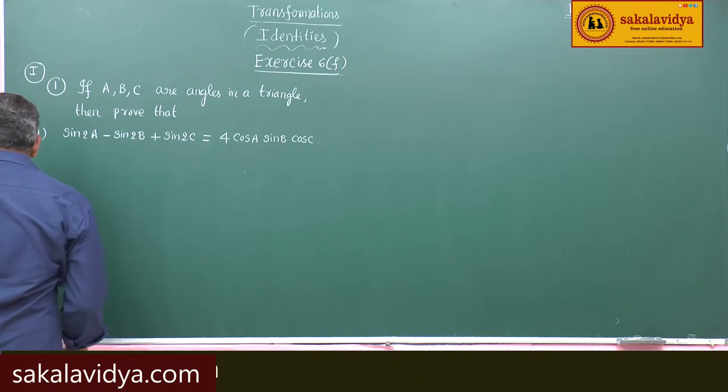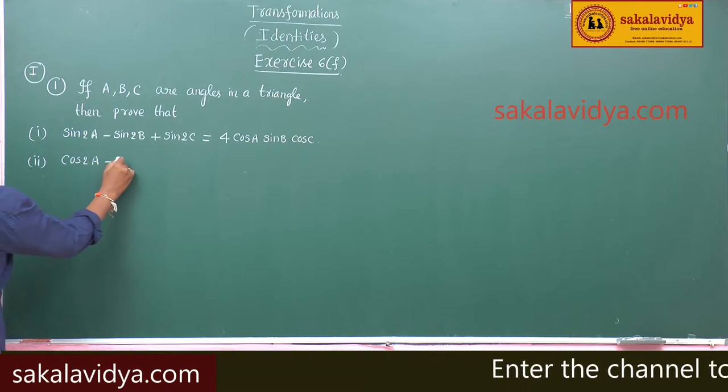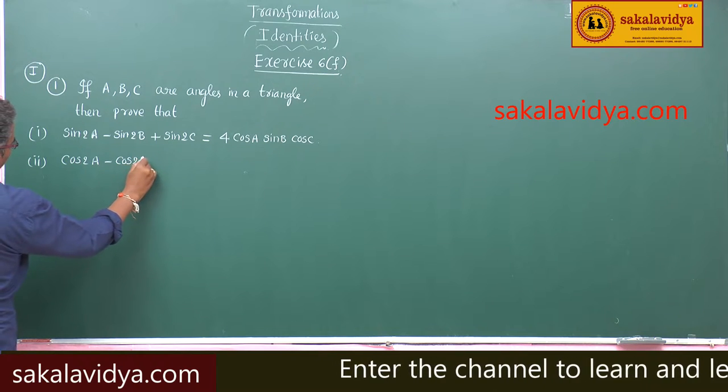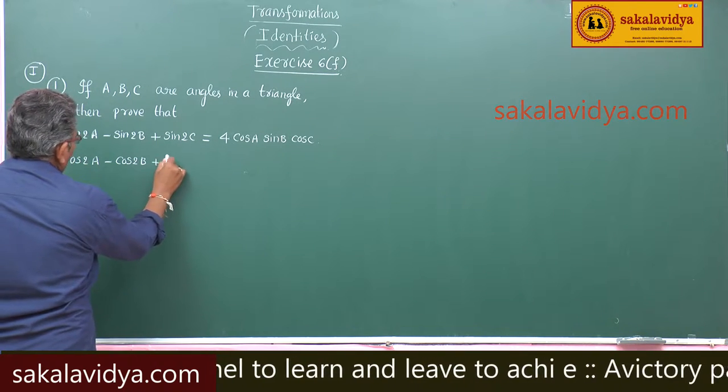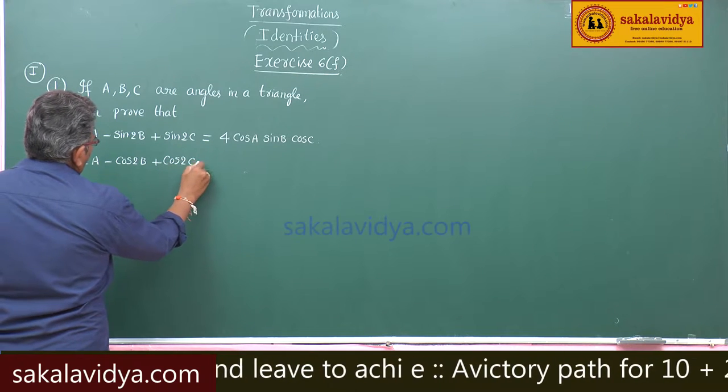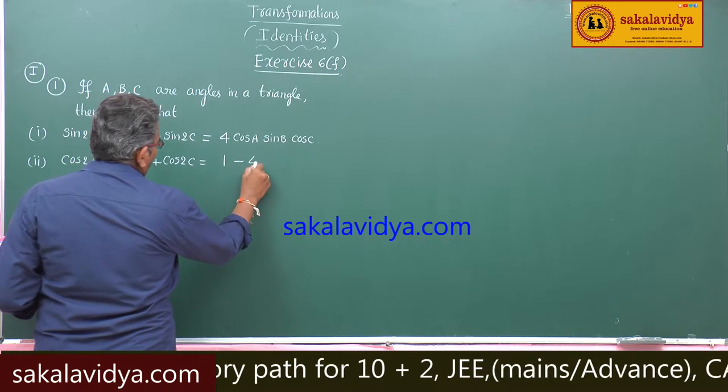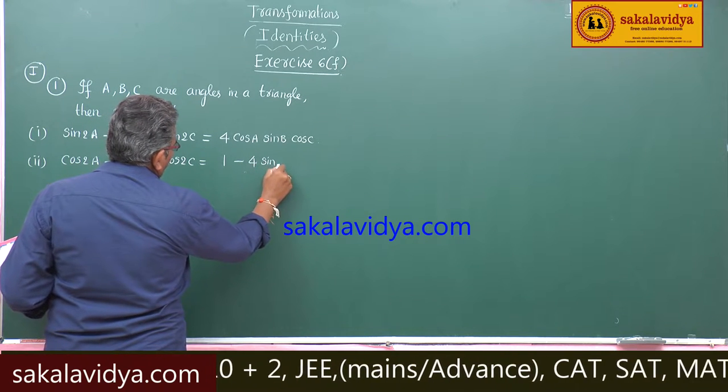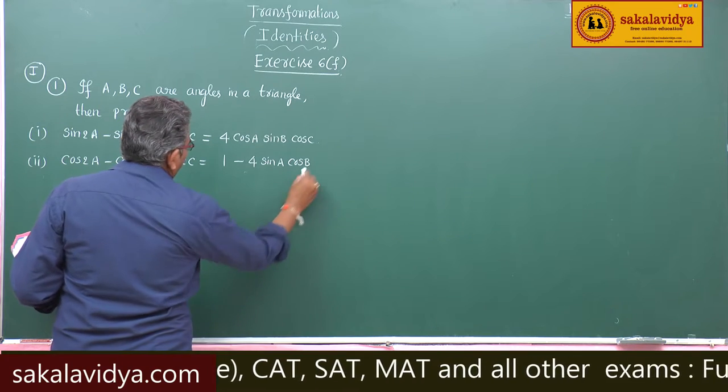Second problem: cos 2A minus cos 2B plus cos 2C is equal to 1 minus 4 sin A cos B sin C.